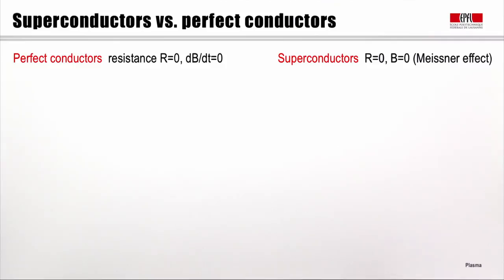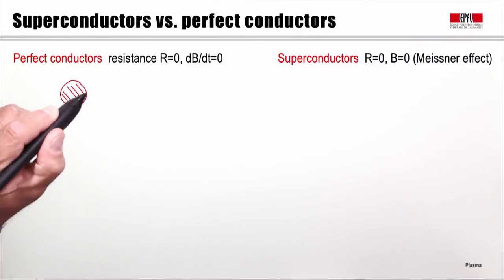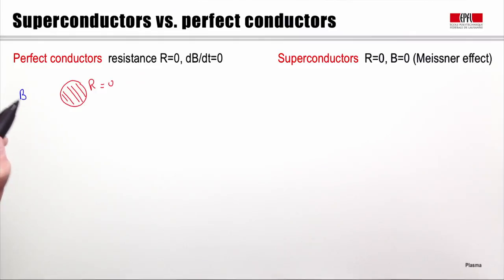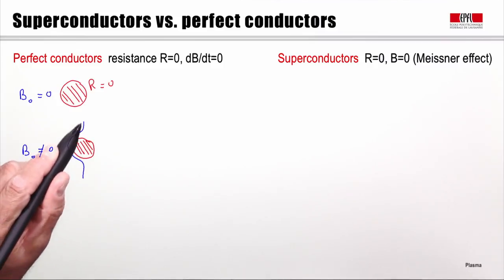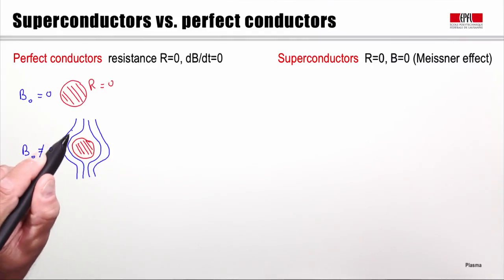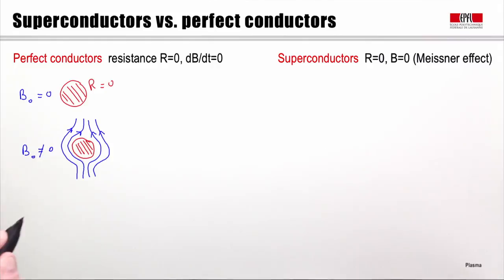Let us briefly discuss the differences between superconductors and perfect conductors. A perfect conductor has zero resistance and therefore prevents variations of magnetic flux through it. If we start with no applied field and then apply a field, the zero resistance prevents field lines from entering the sample — they go around it. When we remove the field, the sample stays in its state of zero resistance with no field inside.